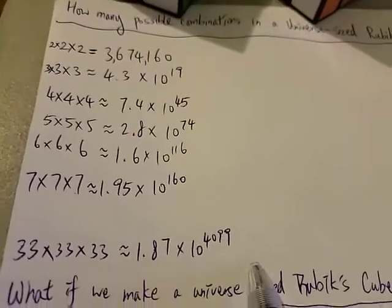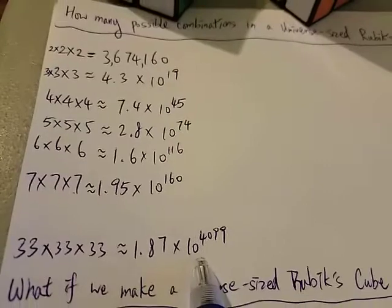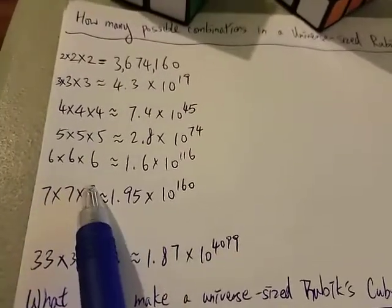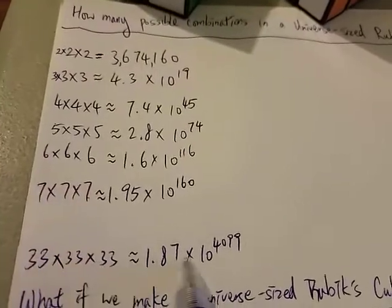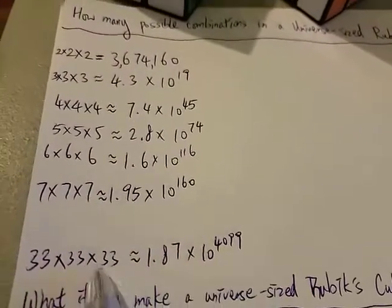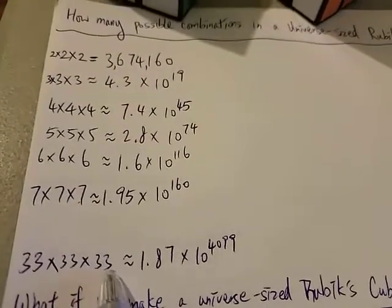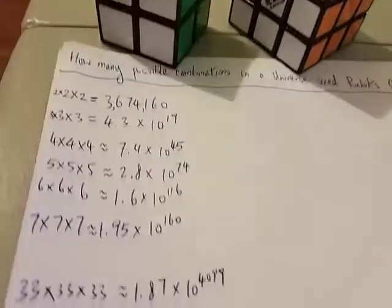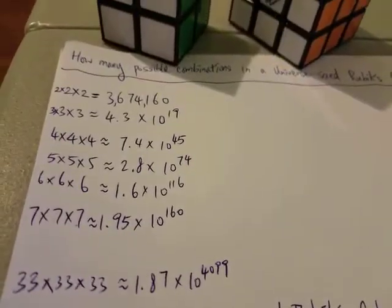This is a huge number, bigger than 10 to the power of 4,000. Just by increasing from 7 to 33, you get a much bigger number. And that is only 33 squares. So what if we go even higher?